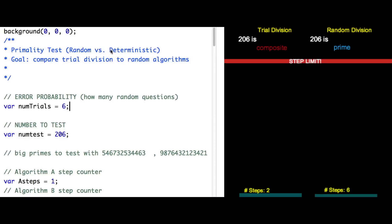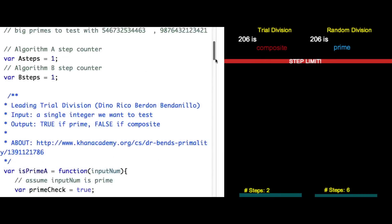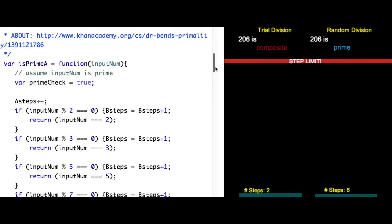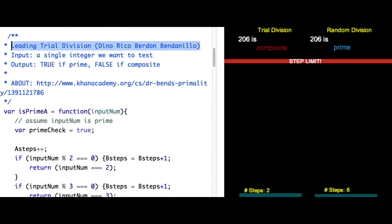So here is a program I've set up which compares our old trial division methods with this new random division test. And I'm specifically using the current trial division speed leader, which is a program by Dino. And I posted the link in the header of the program.